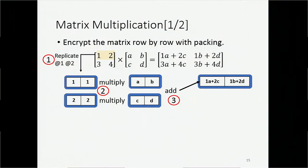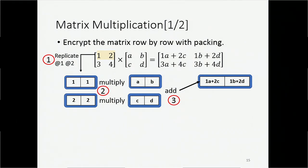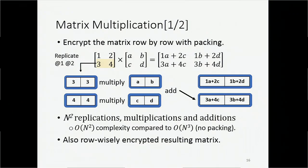Here is an example of how we do matrix multiplication on encrypted matrices. We need three steps to get the result. First, we replicate the left-hand side matrix. Then we multiply the replicated ciphertext with the right-hand side matrix encrypted row by row. Finally, we take a summation to get the result of the first row. We do the same thing for the second row. In total, to multiply an n-square matrix, we need n-square homomorphic operations. This speedup is due to the packing technique. An important property of this primitive is that the resulting matrix is also encrypted row by row — so we say our method is layout consistent.